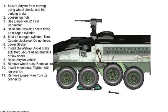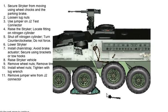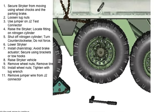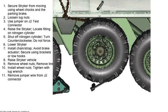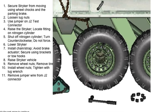Click on the lug wrench. Remove the wheel nuts and then remove the tire. Remember that the tire weighs more than 350 pounds — you will need help.